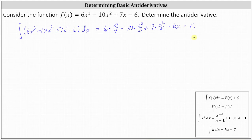The plus c represents any constant, which is why the antiderivative is referred to as a family of functions. Because there's an infinite number of constants that we can use, there are an infinite number of antiderivatives or functions that have a derivative equal to the given function f(x).